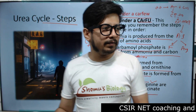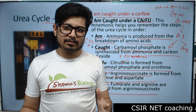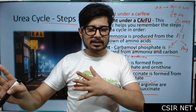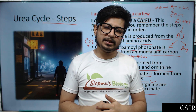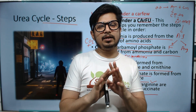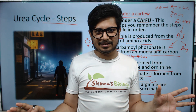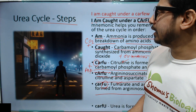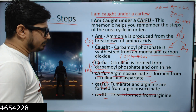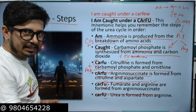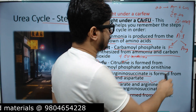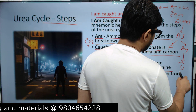We have already talked about the enzymes involved in each step. You can either learn the steps first then add the enzymes, or learn the enzymes separately first. The last letter U stands for Urea — the ultimate product of the urea cycle. Urea is formed from Arginine, so Arginine produces Urea.